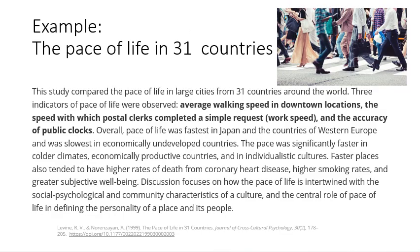An example is a study called 'The Pace of Life in 31 Countries,' which compared the pace of life in large cities across 31 countries. Three indicators of pace of life were observed: average walking speed in downtown locations, the speed with which postal clerks completed a simple request, and the accuracy of public clocks. Overall, pace of life was fastest in Japan and Western Europe and slowest in economically undeveloped countries — faster in colder climates, economically productive countries, and individualist cultures like the US. Faster places also had higher rates of coronary heart disease, higher smoking rates, and greater subjective well-being.